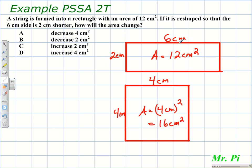And so we can see by changing this side, it increases the area by 4 square centimeters. So the correct choice here is D.